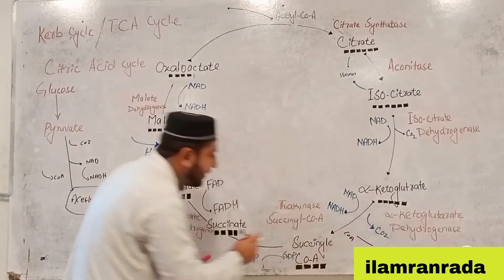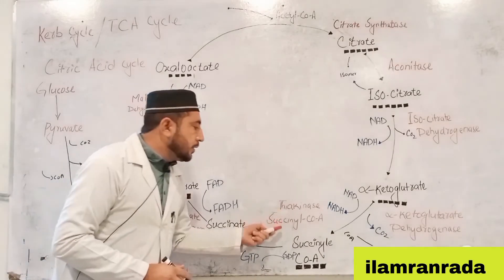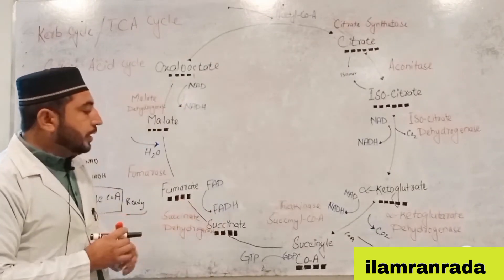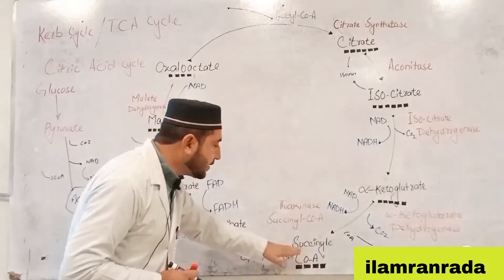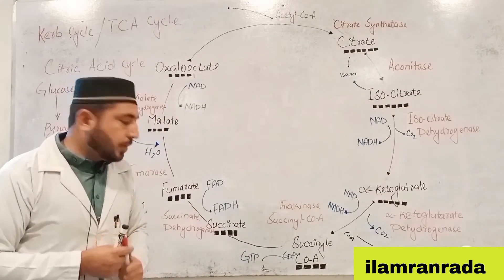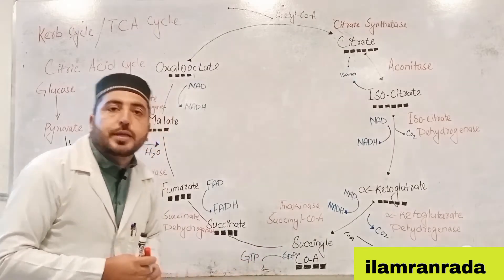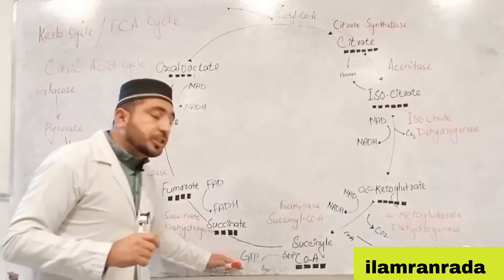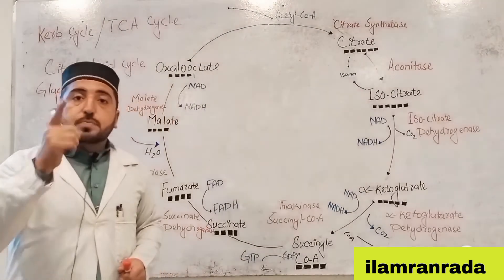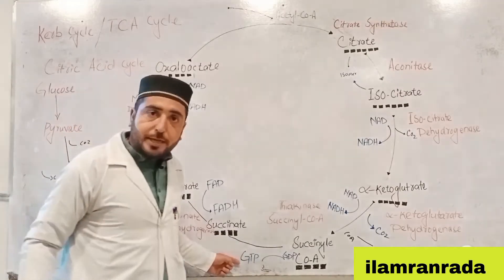Students, succinyl-CoA is formed with the help of coenzyme A. Remember that succinyl-CoA can be converted to succinate, and this step produces GTP, which is equivalent to ATP. This is the energy molecule — in the Krebs cycle, ATP is produced directly at this step.